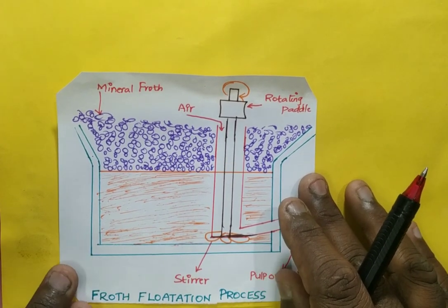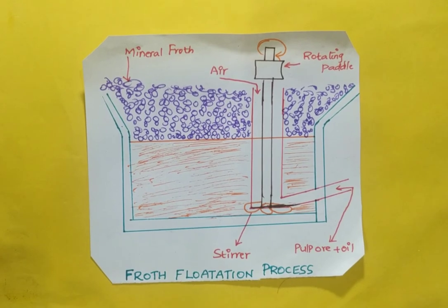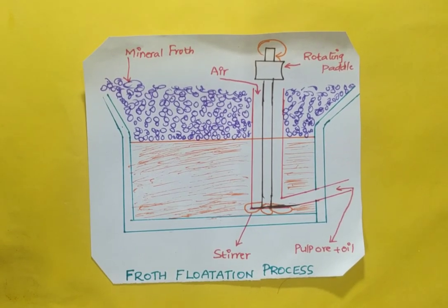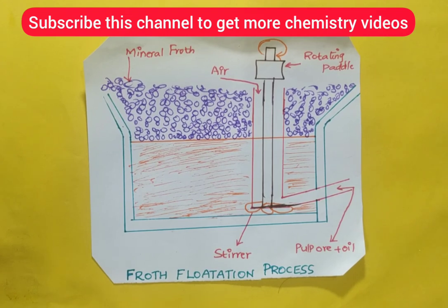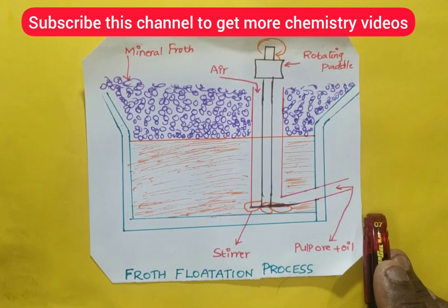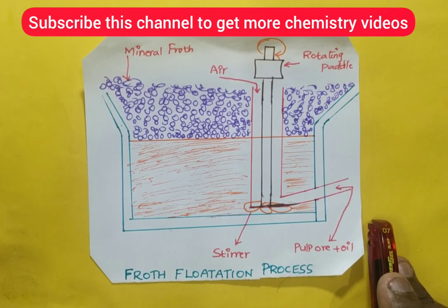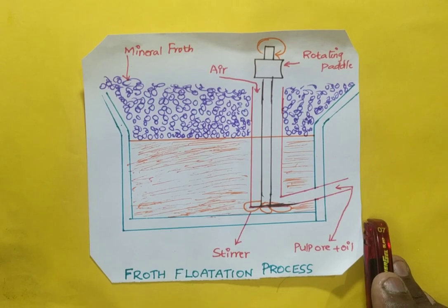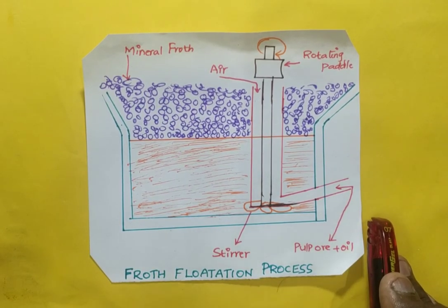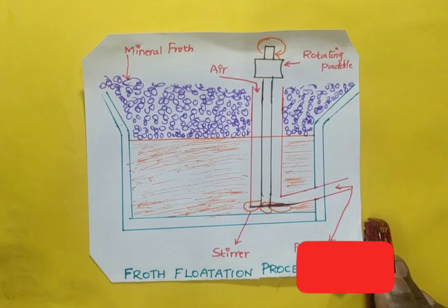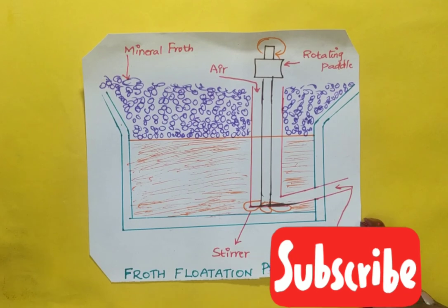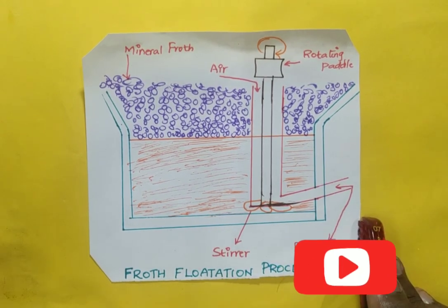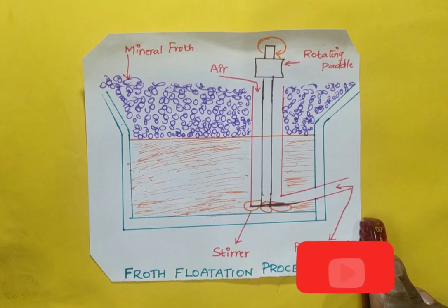That is how the froth flotation process works. This is a very important topic frequently asked in board exams. You should know the role and examples of each chemical used: frothing agent (e.g., pine oil, eucalyptus oil), froth stabilizers (e.g., aniline, creosol), collectors (e.g., sodium ethyl xanthate, sodium lauryl sulfate), and depressants (e.g., sodium cyanide). Know at least one example for each.